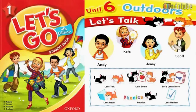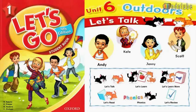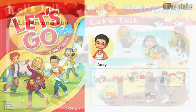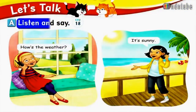Let's go. Student Book 1, Unit 6: Outdoors. Let's talk. A. Listen and say.